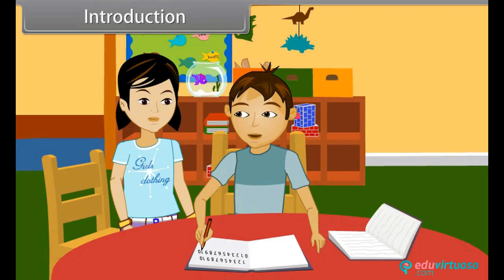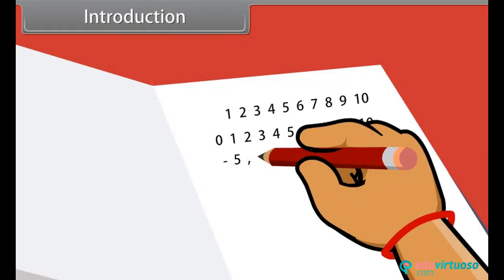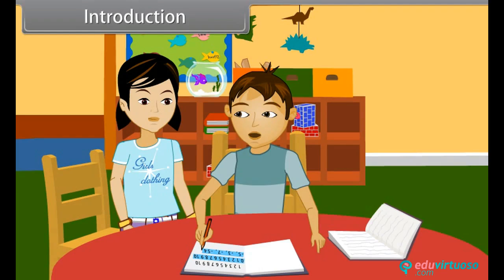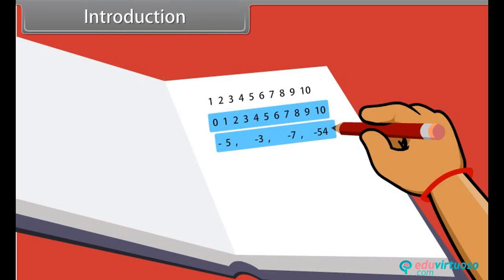Yes, I know. These are whole numbers now. And what are these? Negative numbers. Yes, these are negative numbers. And the collection of all these numbers is called integers.